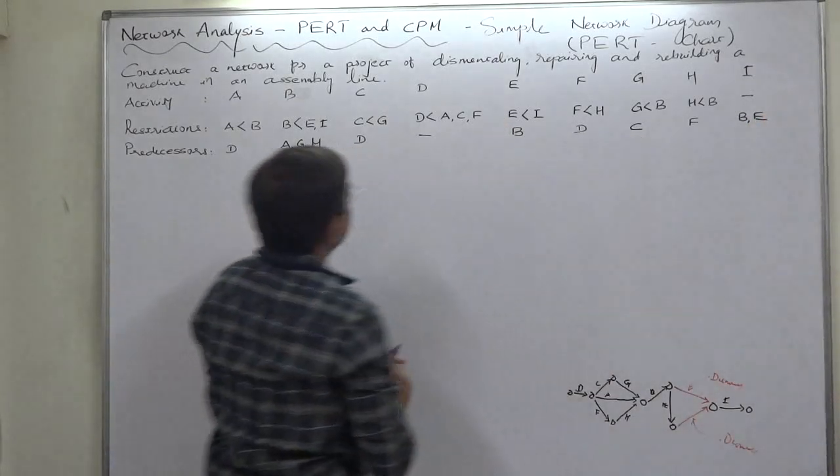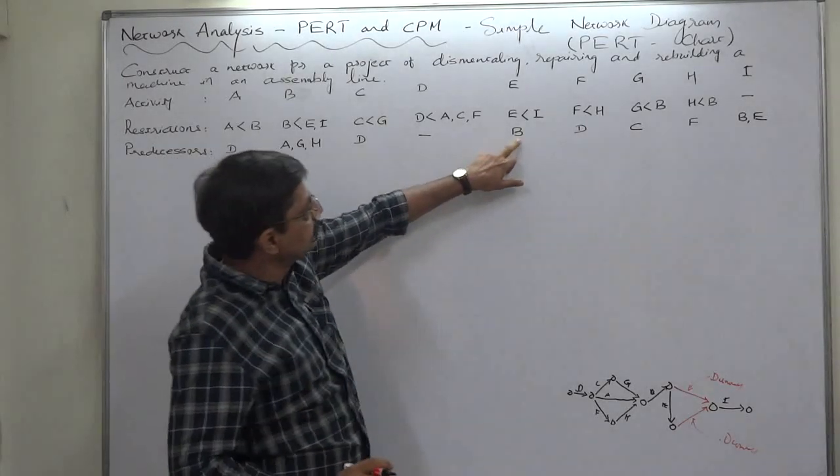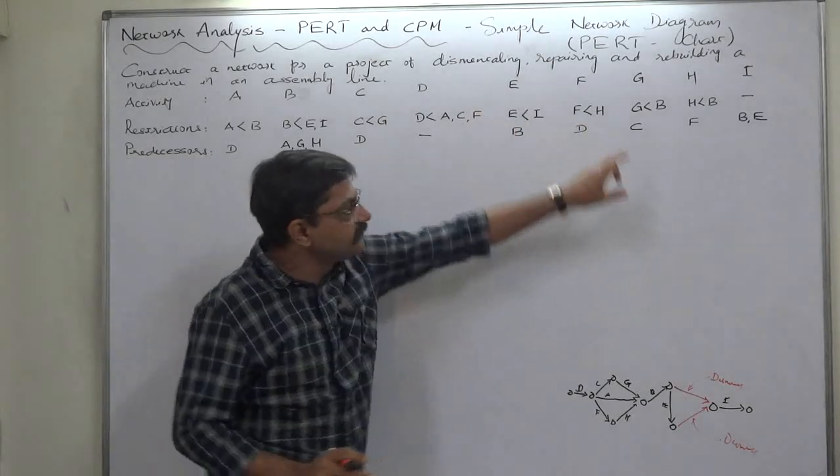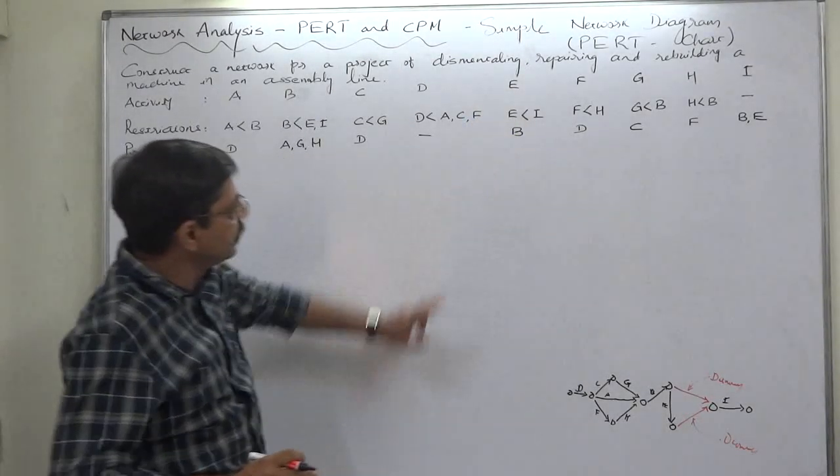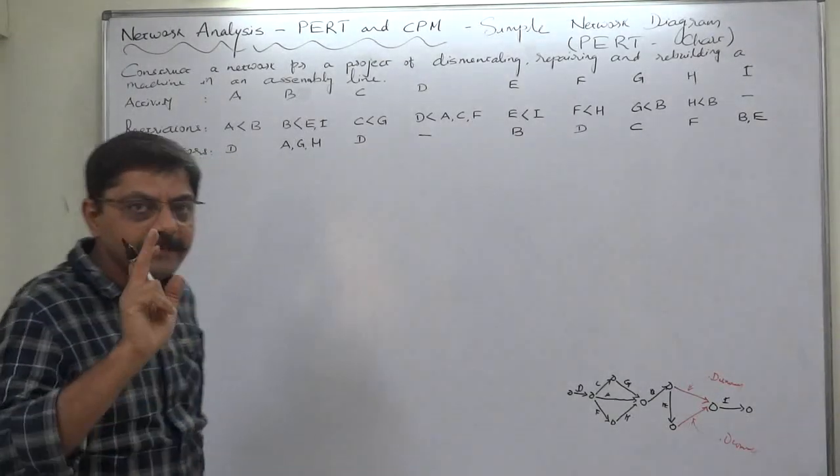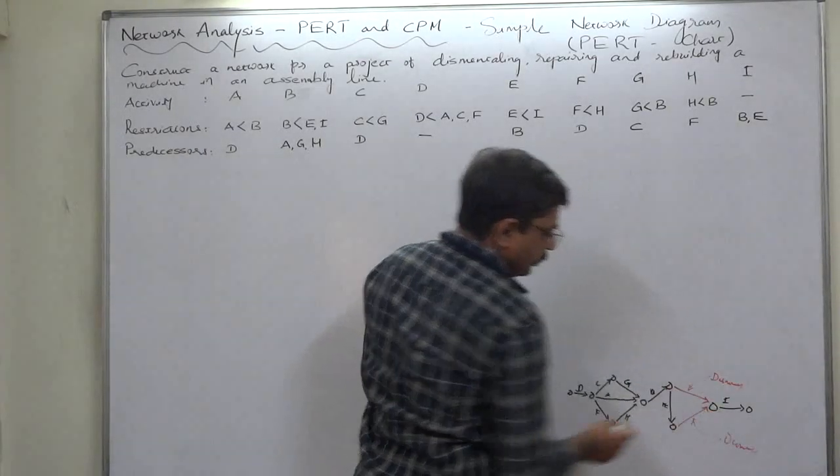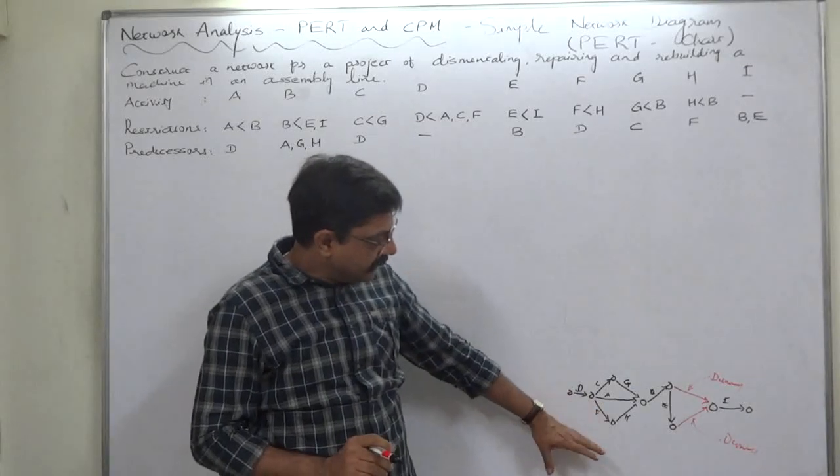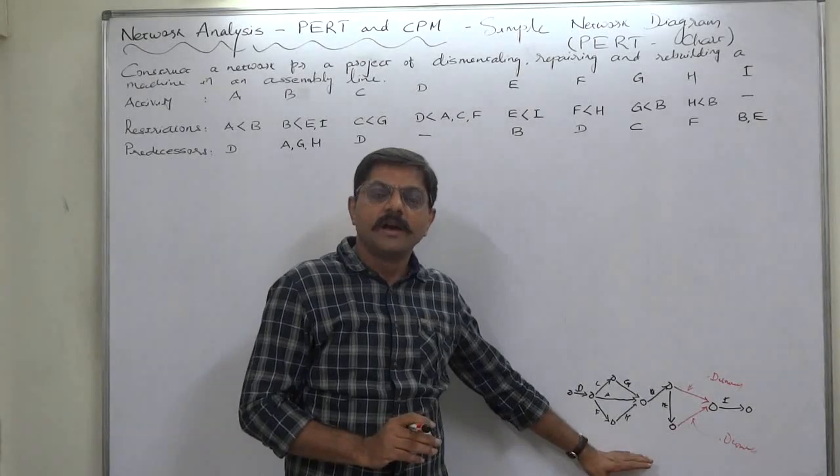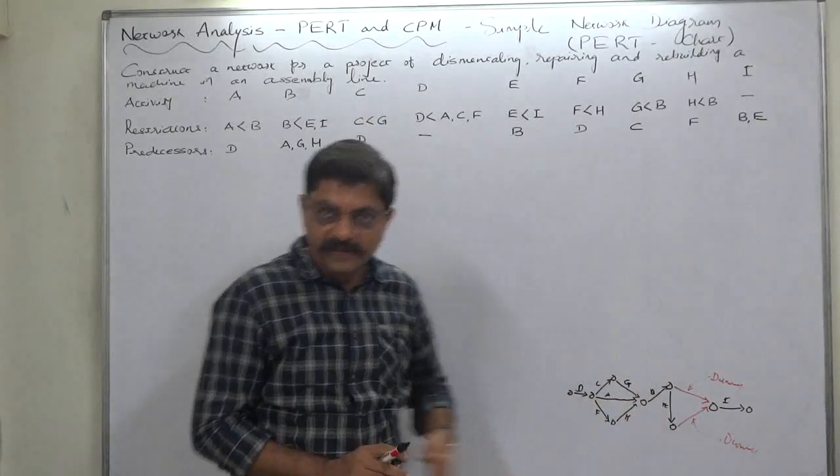And mind well, B is also the predecessor of I. So B is predecessor of E as well as I. Now E starts only after ending B, that means we shall have to use dummy activities. I have already drawn a rough work, to be very frank. I was able to do this rough chart also after drawing one or two other rough works.